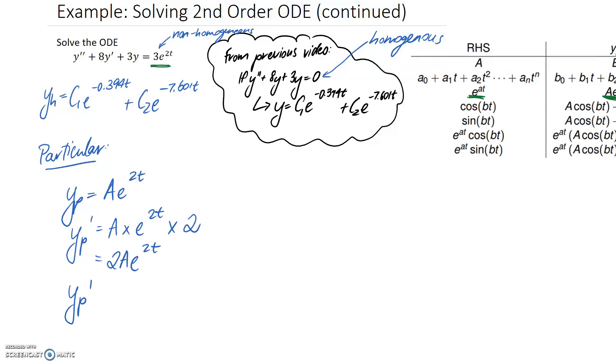And then I want to take a second derivative. So again, applying the chain rule, what I'm going to find is that the 2 up here kind of gets collapsed into the front, and the derivative becomes 4Ae to the 2t.